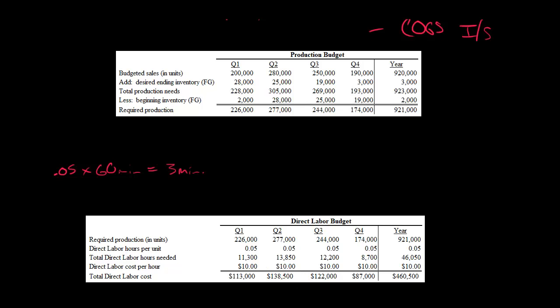We do the same process for quarter three and quarter four. You can see the cost of direct labor for each quarter: $113,000, $138,500, $122,000, and $187,000. You not only know the cost of direct labor for each quarter, but you can add it up for the entire year and see that we're budgeted to incur $460,500 in direct labor costs for this year.